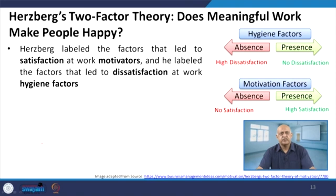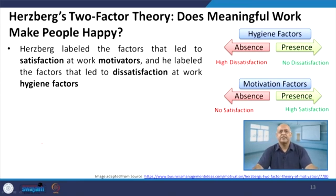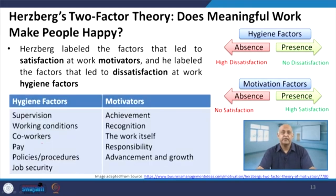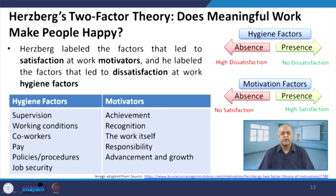Similar research was done by Herzberg, who proposed the two-factor theory — also called the hygiene factors theory. The hygiene factors theory is about absence and presence: high dissatisfaction versus no dissatisfaction. For example, salary — for the first month the person is motivated, but the next month it is repetitive. The presence of salary will have no dissatisfaction, but absence of salary will create high dissatisfaction. Salary is not creating a motivational factor. Examples of hygiene factors: supervision, working conditions, co-workers, pay, policies, procedures, and job security.